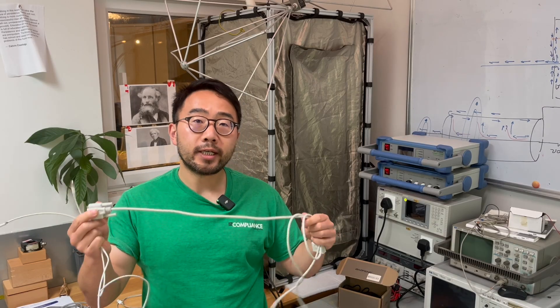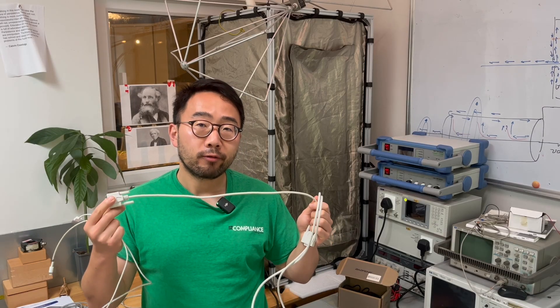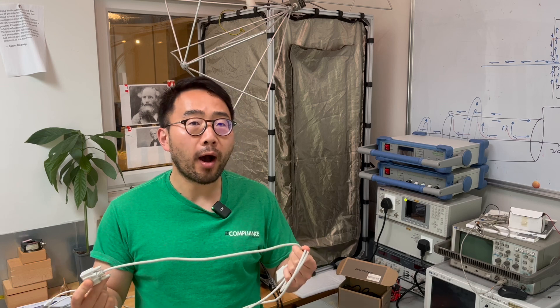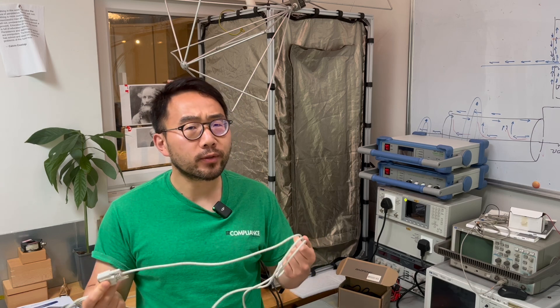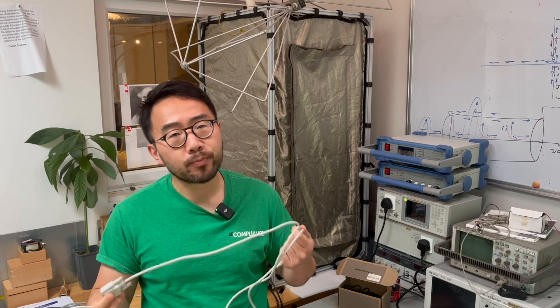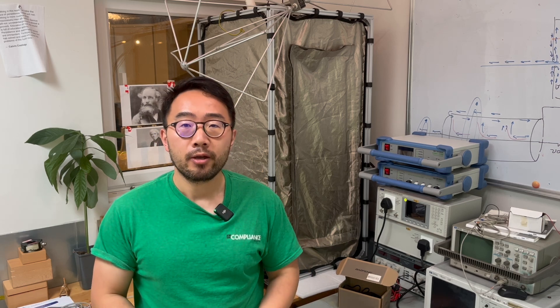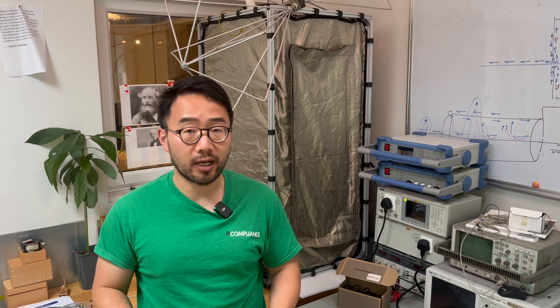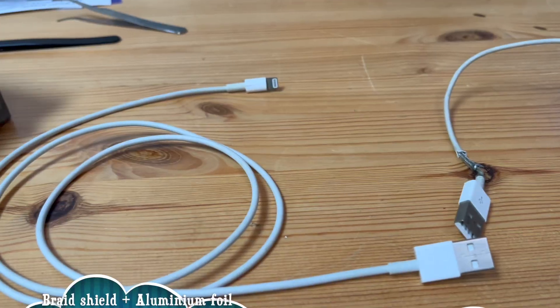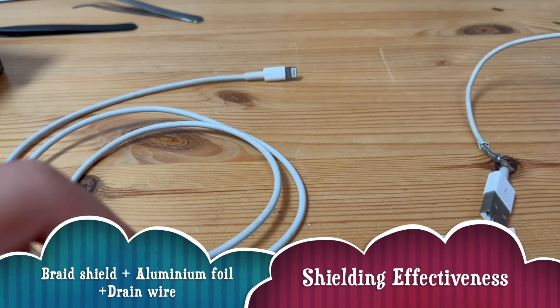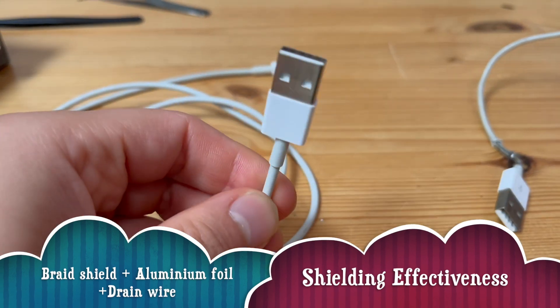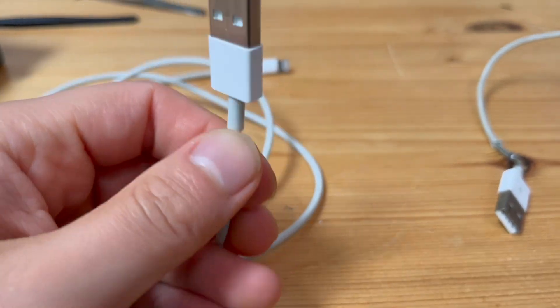We proved that using an aluminum foil with drain wire does not seem to be a good solution, especially if you are involved in designing high-speed transmission lines between two subsystems. Now let's have a look at another type of shielded cable and compare the performance — a USB type shielded cable.